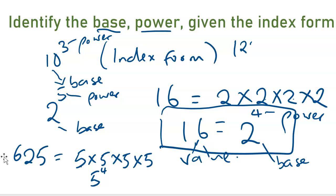If you had 125 and you want to write it as index form, it will be 5 times 5 times 5. So in index form, it will be 5 to the power of 3.